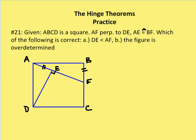First one, number 21: given figure ABCD is a square, and AF is perpendicular to DE as drawn. AE is congruent to BF as drawn. Which of the following is going to be correct based off of the drawing — DE is less than AF, or the figure is overdetermined.